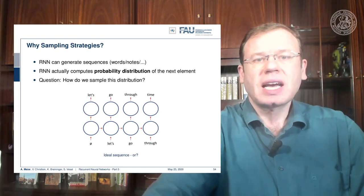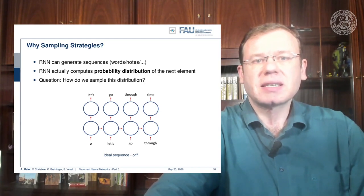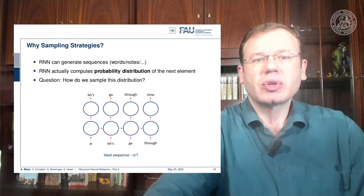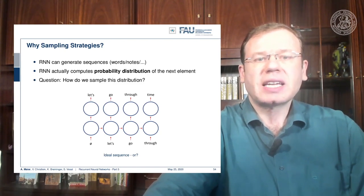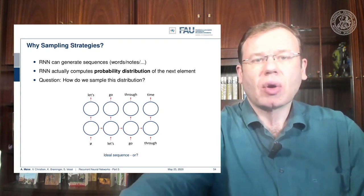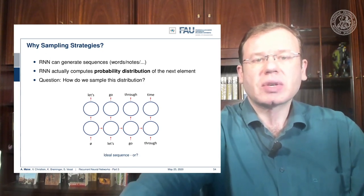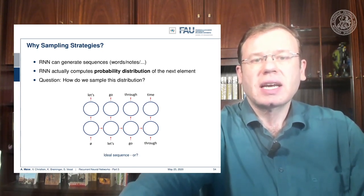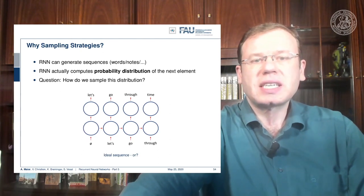The idea here is that you start with the empty symbol and then you use the RNN to generate some output. Then you take this output and put it into the next state's input. If you go ahead and do so, you can actually generate whole sequences from your trained recurrent neural network.